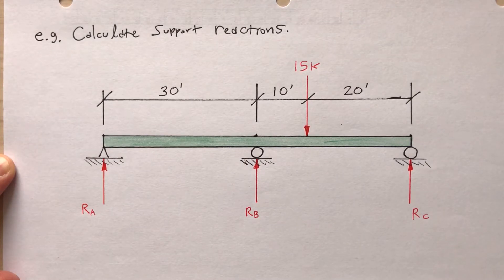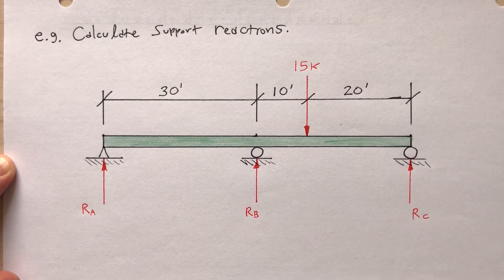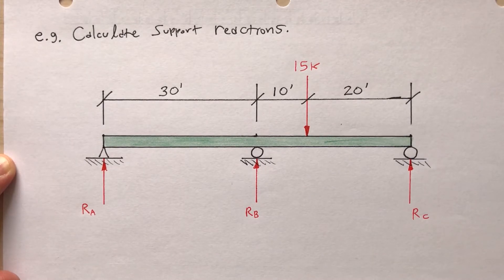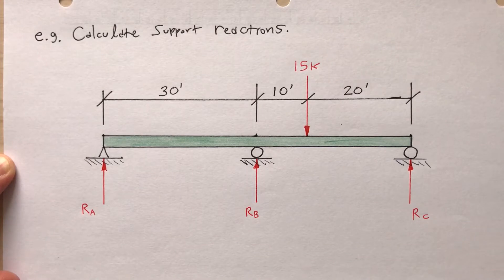So once again, this is the beam that I want to analyze. I want to determine what the reactions R sub A, R sub B, and R sub C are, but this time I want to use the flexibility method, so there are several steps that I need to go through to do that.